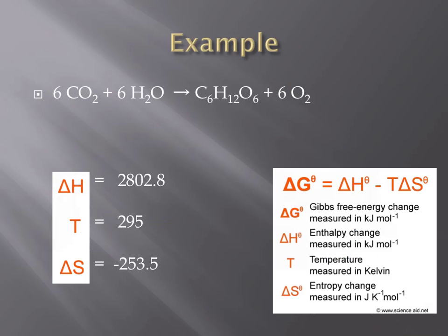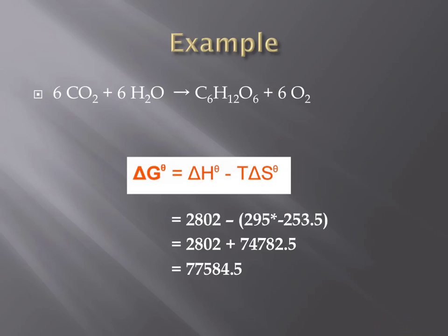Now that we have calculated the three variables shown on the left - enthalpy, temperature, and entropy - we can find the value for Gibbs free energy, or delta G. If you take our value for enthalpy, 2802, and subtract the product of temperature and entropy, which are 295 degrees Kelvin multiplied by negative 253.5, the calculation for delta G, or the change in Gibbs free energy, would be 77,584.5.